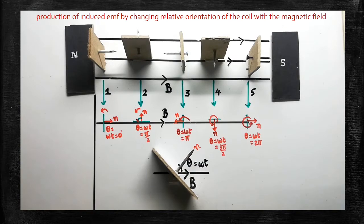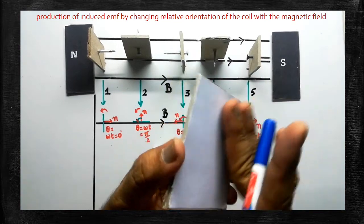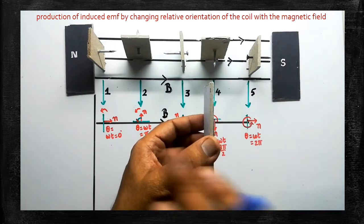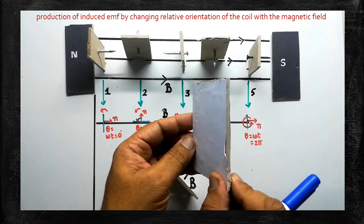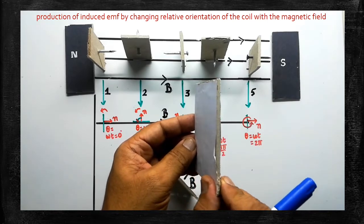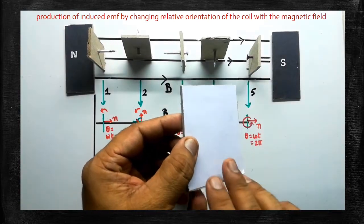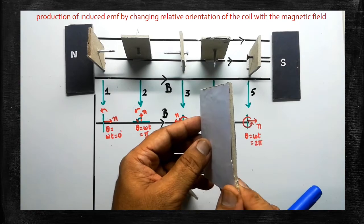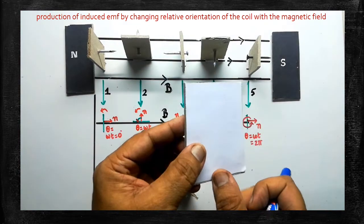First you have to learn what is orientation. Assume that this is a rectangular coil and this portion can be assumed as the plane of the coil. There are two pole pieces on either side of the rectangular coil. That coil can be rotated. Because of rotation, the magnetic flux linked with the coil will change. The magnetic flux linked with the coil changes with respect to time, so EMF will be induced.